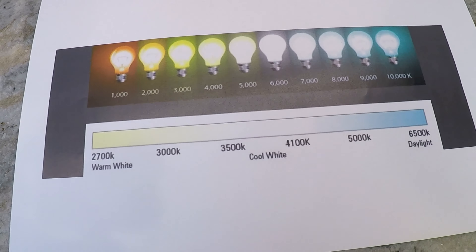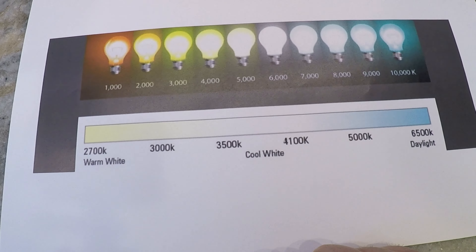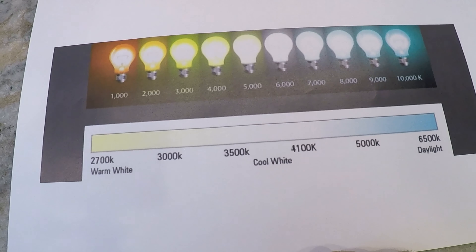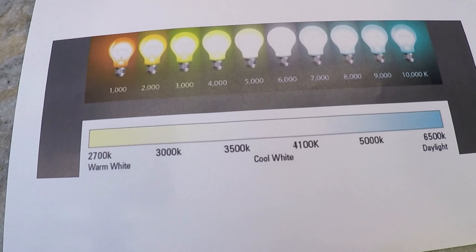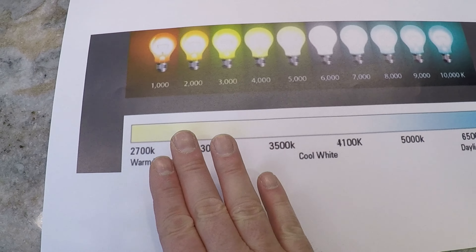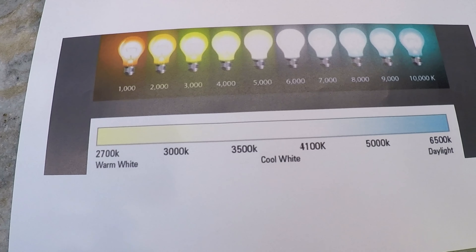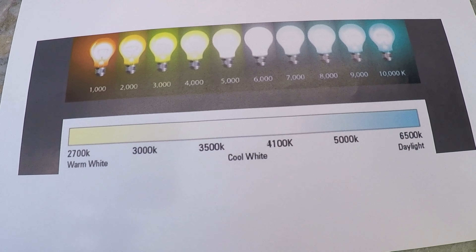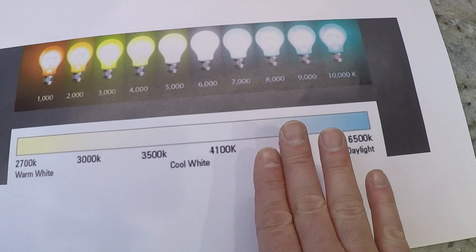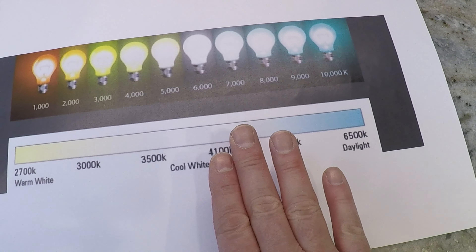You can also match the color temperature to the decor in the room. So if you have a lot of browns and wood tones, you might want to go towards the warmer end. And if you have a lot of whites and grays, you might want to go a little more towards the cooler direction.